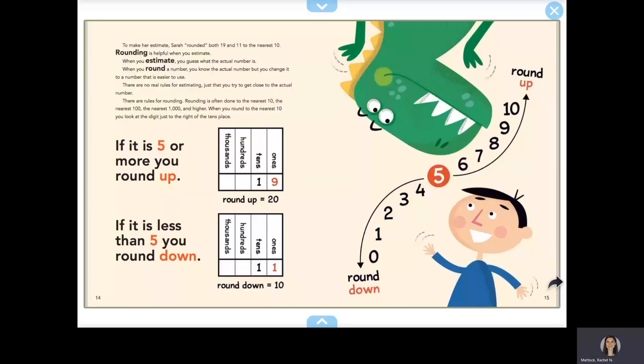To make her estimate, Sarah rounded both 19 and 11 to the nearest 10. Rounding is helpful when you estimate. When you estimate, you guess what the actual number is. When you round a number, you know the actual number, but you change it to a number that is easier to use. There are no real rules for estimating, just that you try to get close to the actual number. There are rules for rounding.